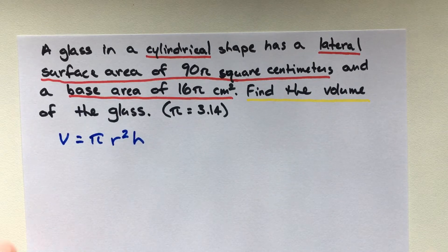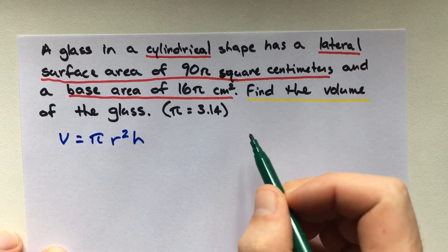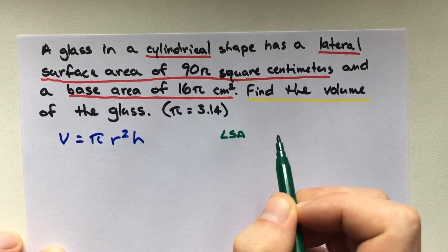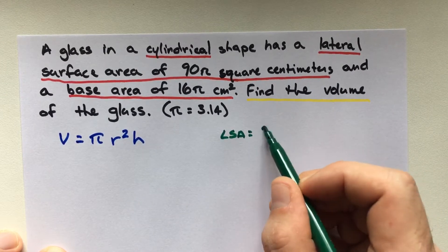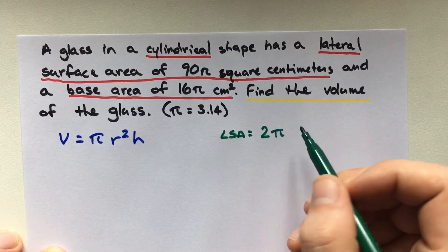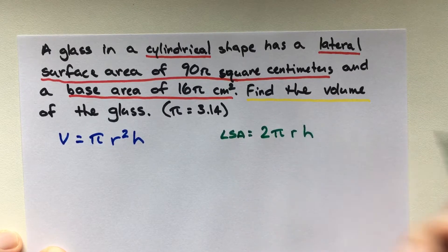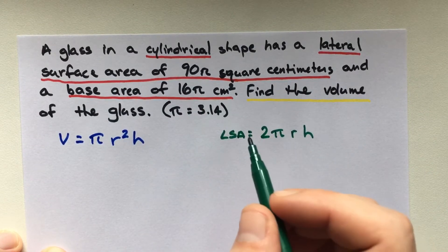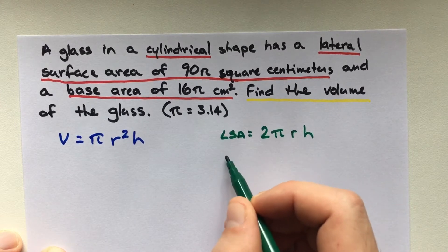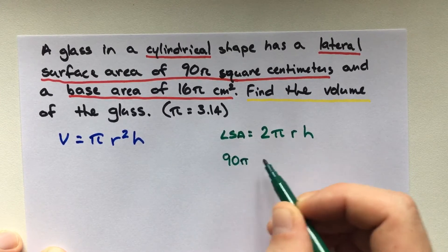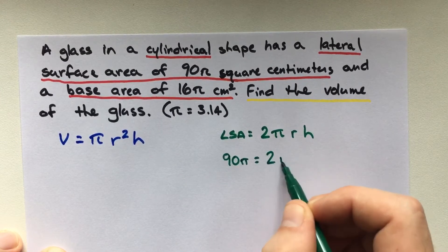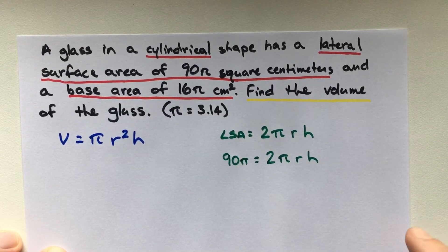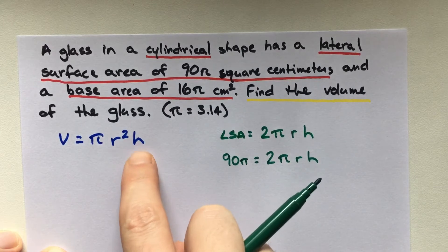So, first, let's look at our lateral surface area. The formula for your lateral surface area of a cylinder is 2 times π times radius times height. We know our lateral surface area is 90π. So we can set that up: 90π = 2πrh. And let's go ahead and just solve for h so we can put it in here.